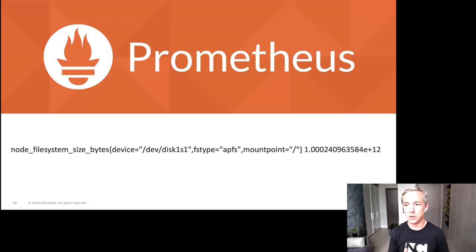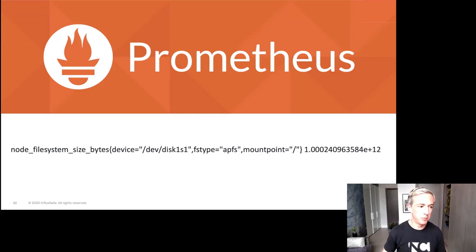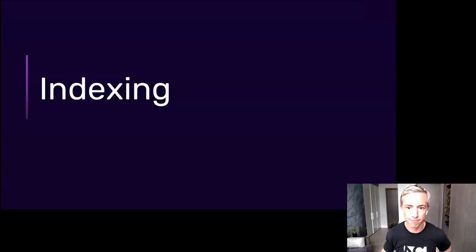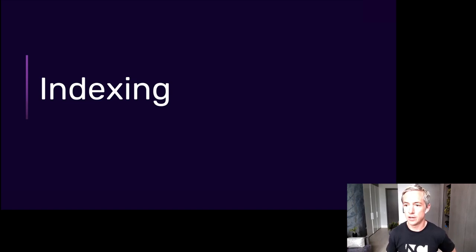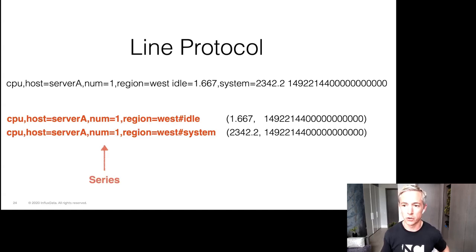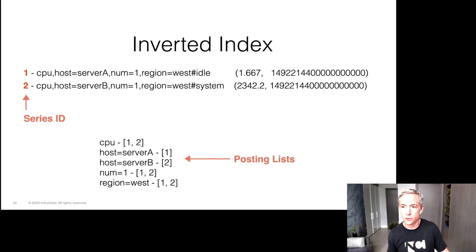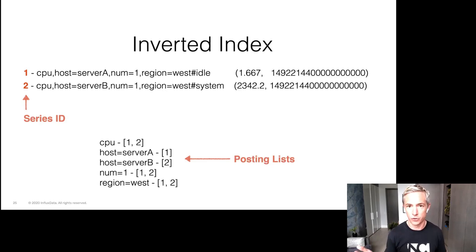Prometheus, from the server monitoring realm, has essentially the same structure as OpenTSDB but names the elements metric, labels, and value — visible in the Prometheus exposition format. Timestamps in Prometheus are assigned by the Prometheus server when it scrapes the data. InfluxDB and Prometheus bake this data structure into the database by splitting it into two parts: an inverted index mapping metadata like measurement or labels to the underlying time series, and the actual time series data. We map tag key-value pairs like host=server to underlying series IDs, creating posting lists to answer queries like 'what time series are in the west region?'